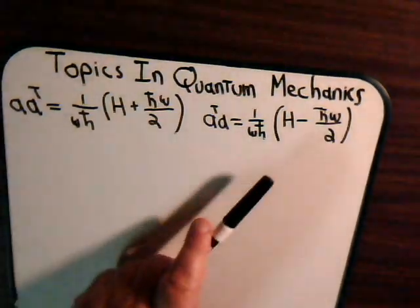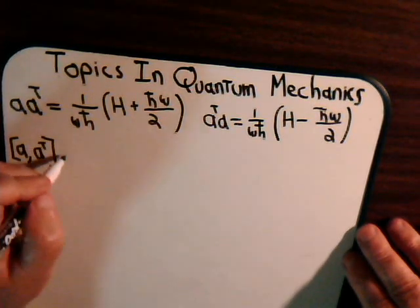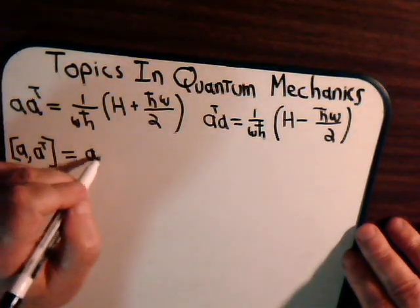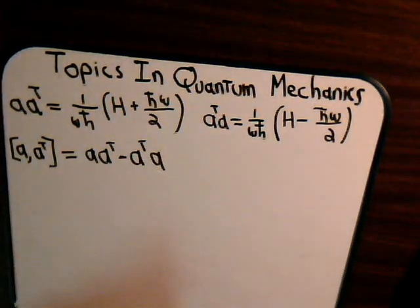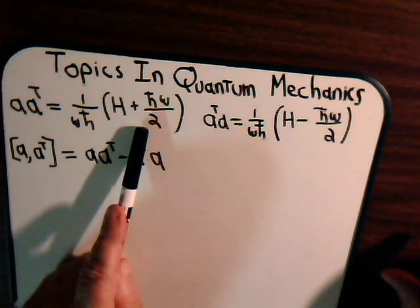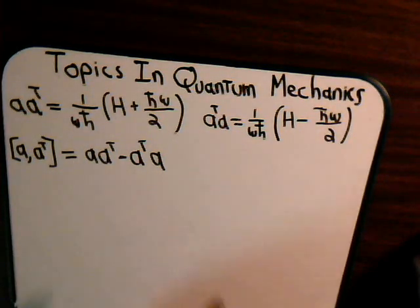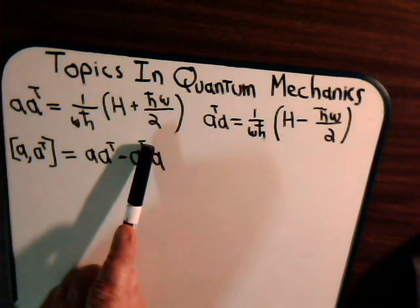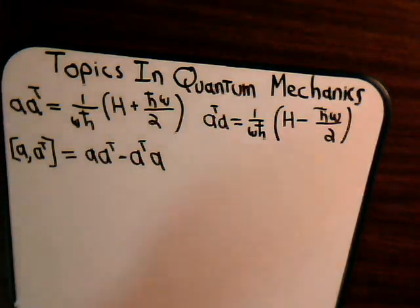Here's what we worked out in the previous video — these two expressions. The commutator a a-dagger is equal to a a-dagger minus a-dagger times a. This shouldn't be too difficult to figure out. The Hamiltonians are going to cancel. Here we have h-bar omega over 2, and that gives us plus h-bar omega over 2, so it's going to give us h-bar omega divided by h-bar omega. This just equals 1.